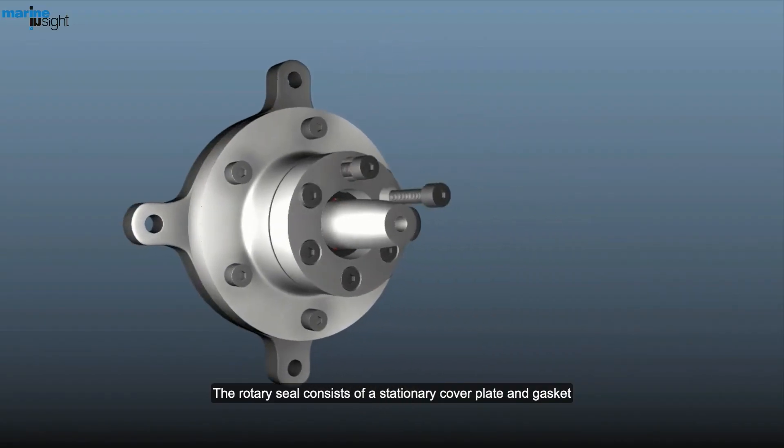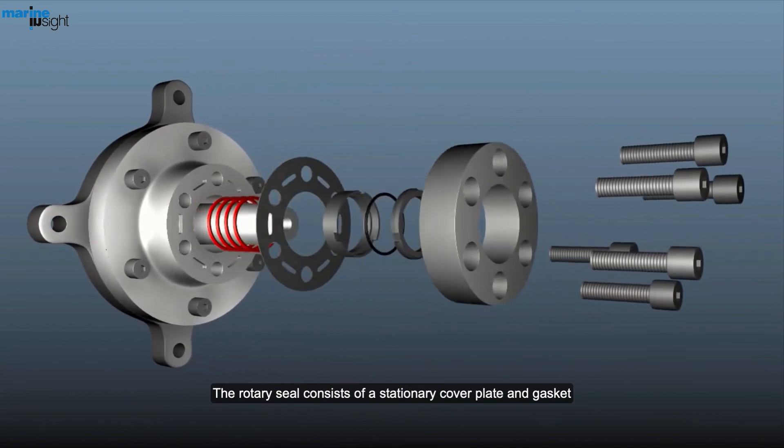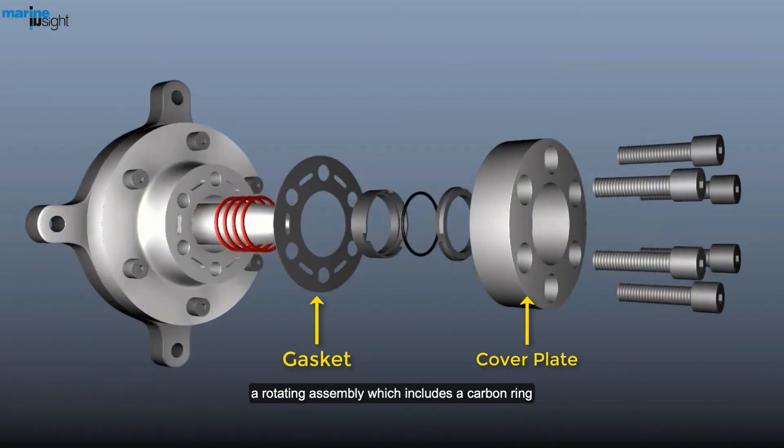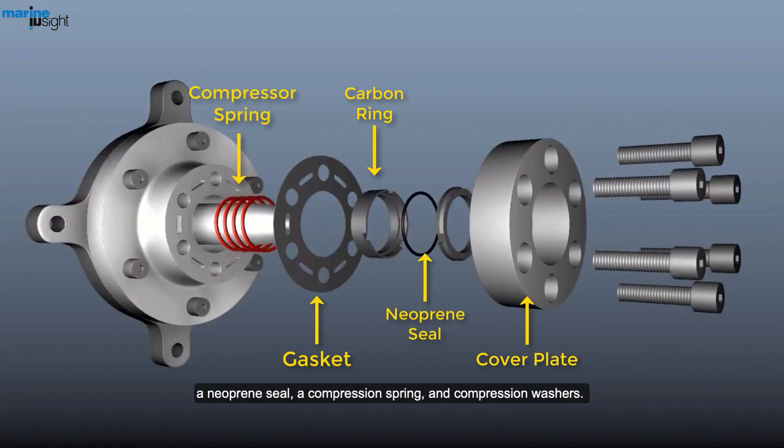The rotary seal consists of a stationary cover plate and gasket, a rotating assembly which includes a carbon ring, a neoprene seal, a compressor spring and compression washers.